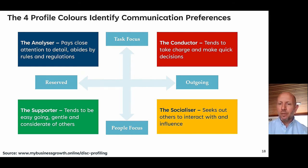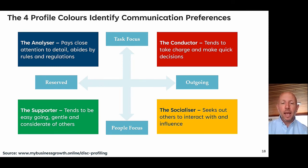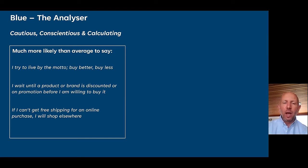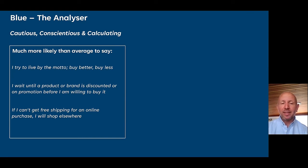We were interested in seeing whether we could take this personal development model and apply it within a quantitative survey — almost like a segmentation — to unlock something you wouldn't get through overt questioning alone. We trialled this in a survey for a clothing retailer, to see whether these four character types would play out in the preferences people express about clothing. Our blues — the analysers — we were hoping would come out as cautious, conscientious, and calculating. And that's exactly what we saw: they agreed with statements like 'I live by the motto buy better, buy less,' 'I wait until a product is discounted before buying,' and 'if I can't get free shipping, I'll shop elsewhere.'